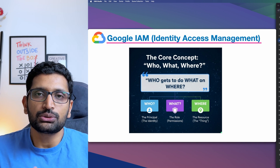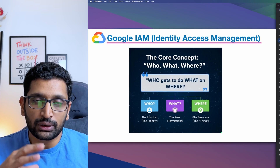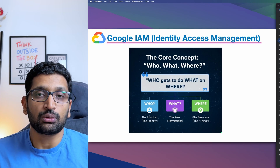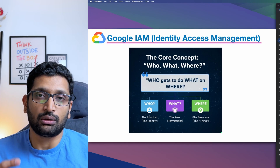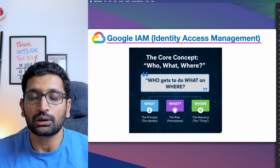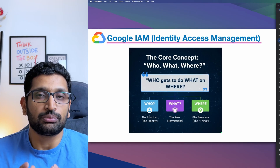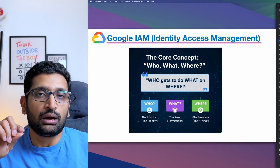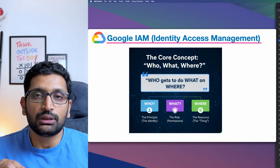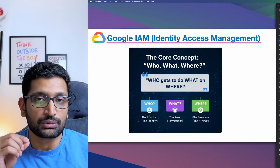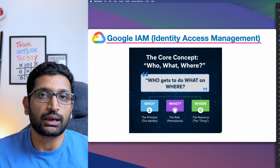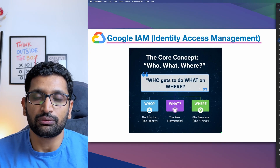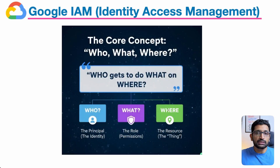Instead, you should create a different account and onboard the user onto your Google Cloud with a limited set of permissions, so that they can perform certain tasks within the permission boundaries which you have set using identity and access management within Google Cloud. Let's take a look at how identity access management works.